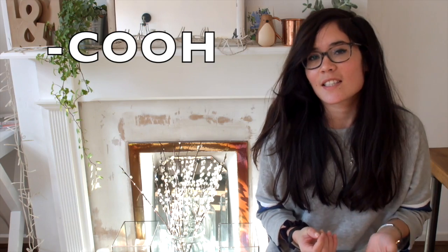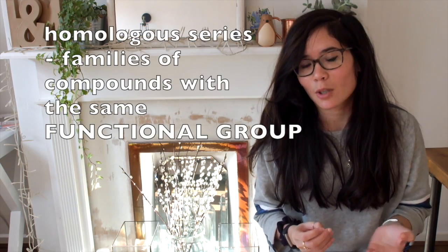Another family is alcohols. They have a special group called OH on the end. Carboxylic acids, they're another group you need to know about. Their special group, which we call the functional group, is COOH. And then lastly, esters, they have a special functional group which is COO. So there are lots of different families of compounds and we call these different families homologous series. And if you were to define this, all you need to say is families of compounds with the same functional group.